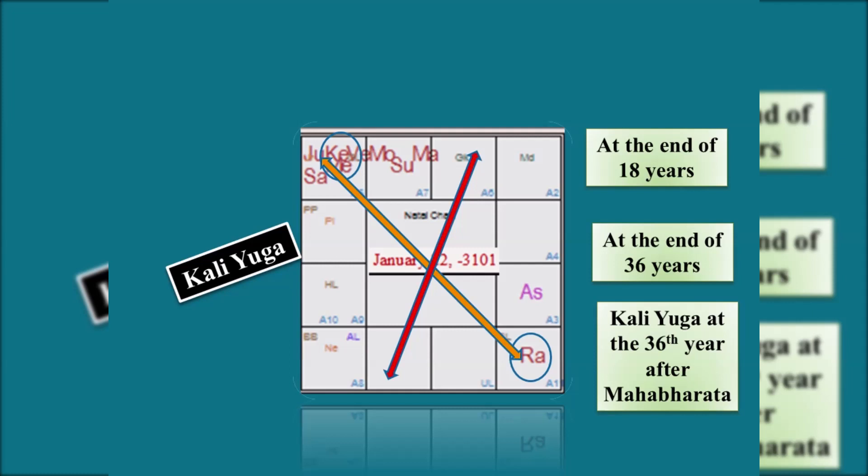In which case the nodal axis will be here like this connecting Taurus and Scorpio. This is impossible given the fact that Kali Yuga started in this axis in 3101 BCE.